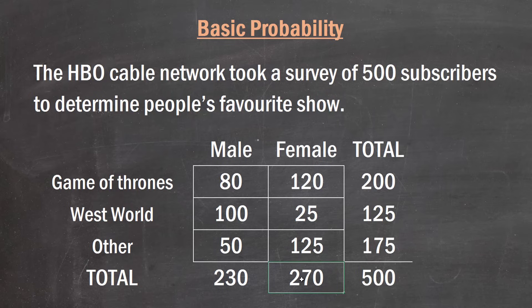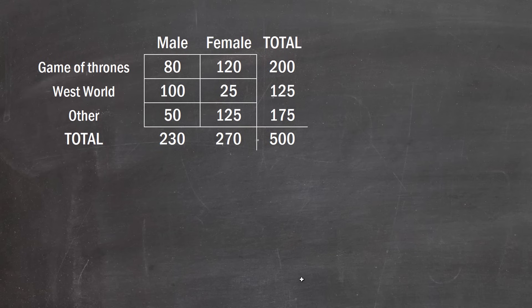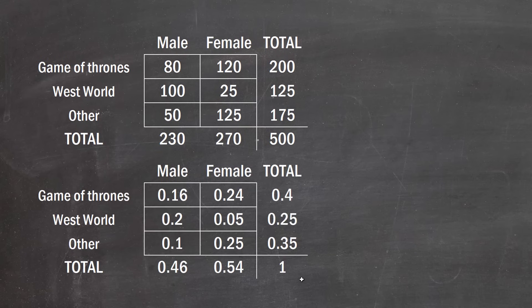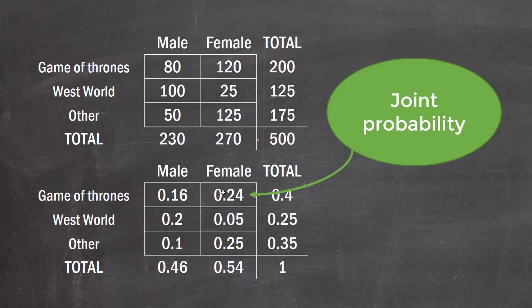But this is not quite a probability distribution just yet. If we take that same table and divide everything by 500 — the total number of observations — we get something called a probability distribution. So where before we had 120 females who preferred Game of Thrones, we now have 0.24 in that cell, because that tells us that 24% of the distribution is defined by that joint event. That's why we call it a joint probability.